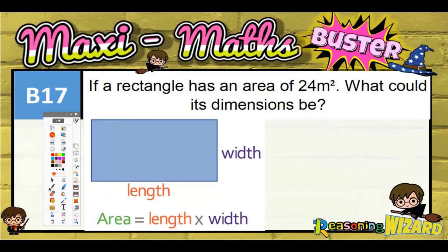Question 17. If a rectangle has an area of 24 meters squared, what could its dimensions be?